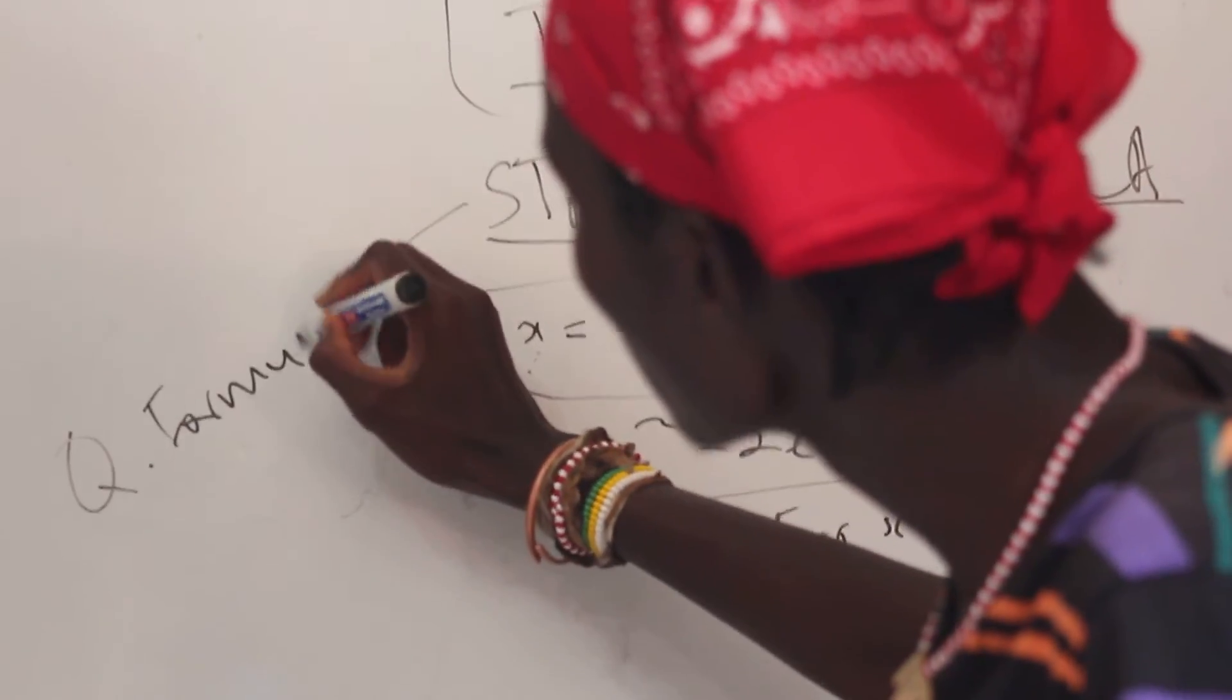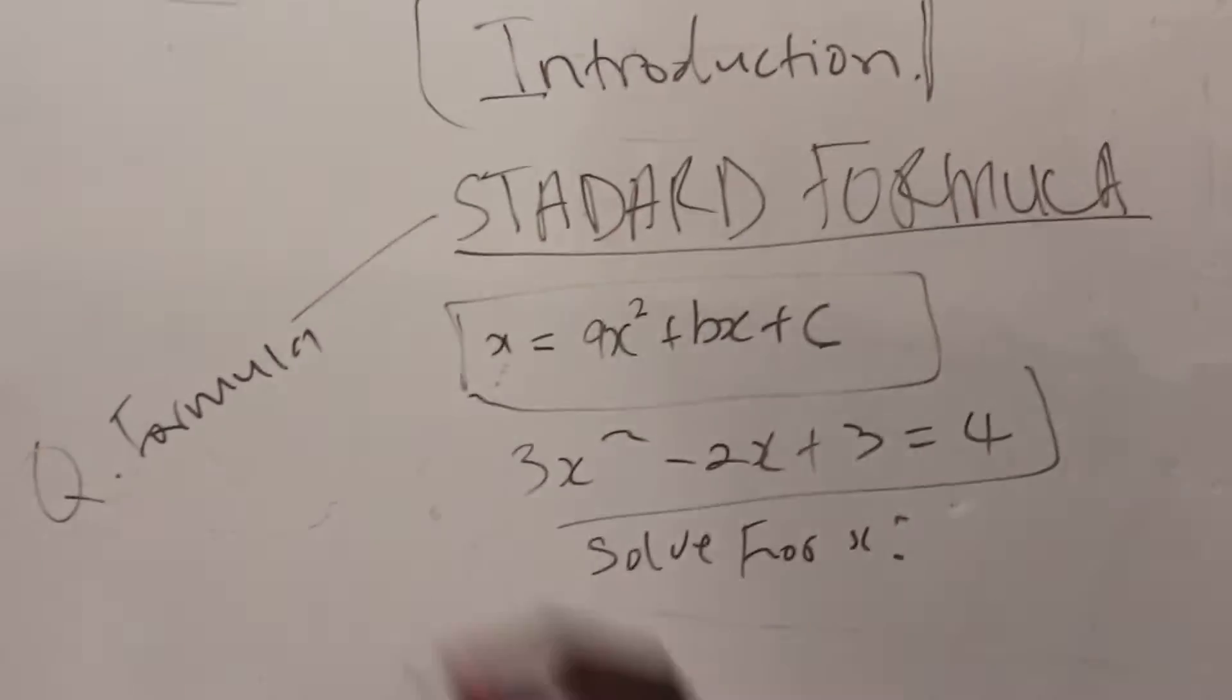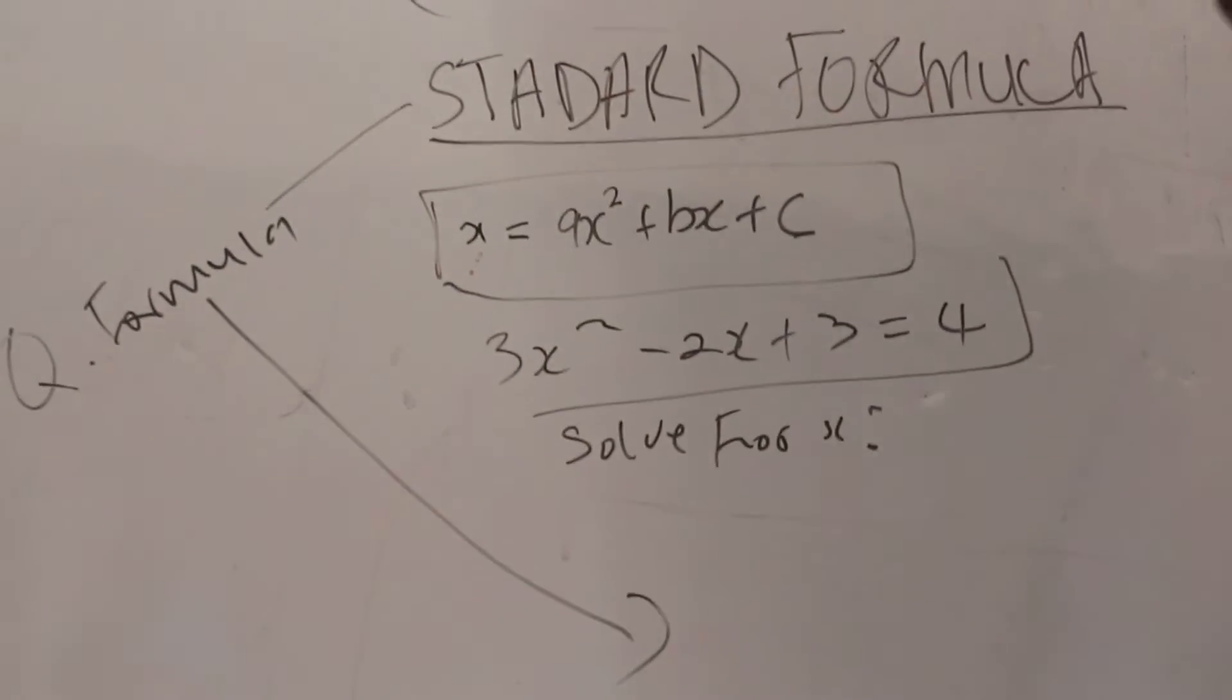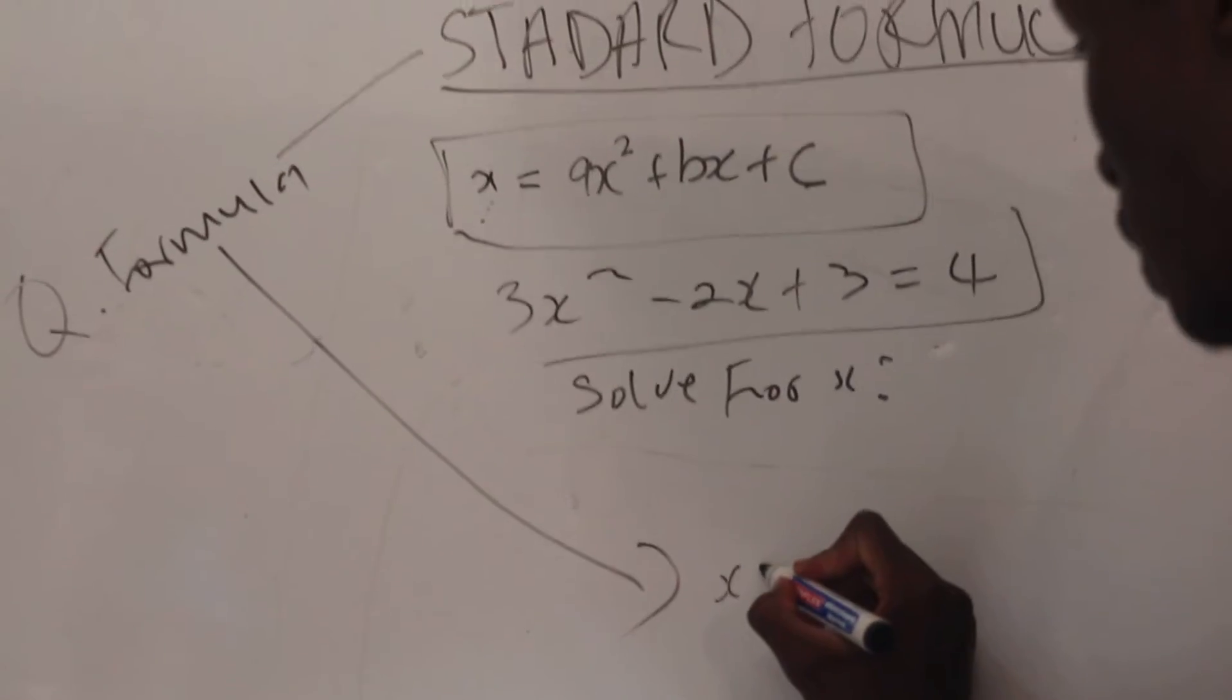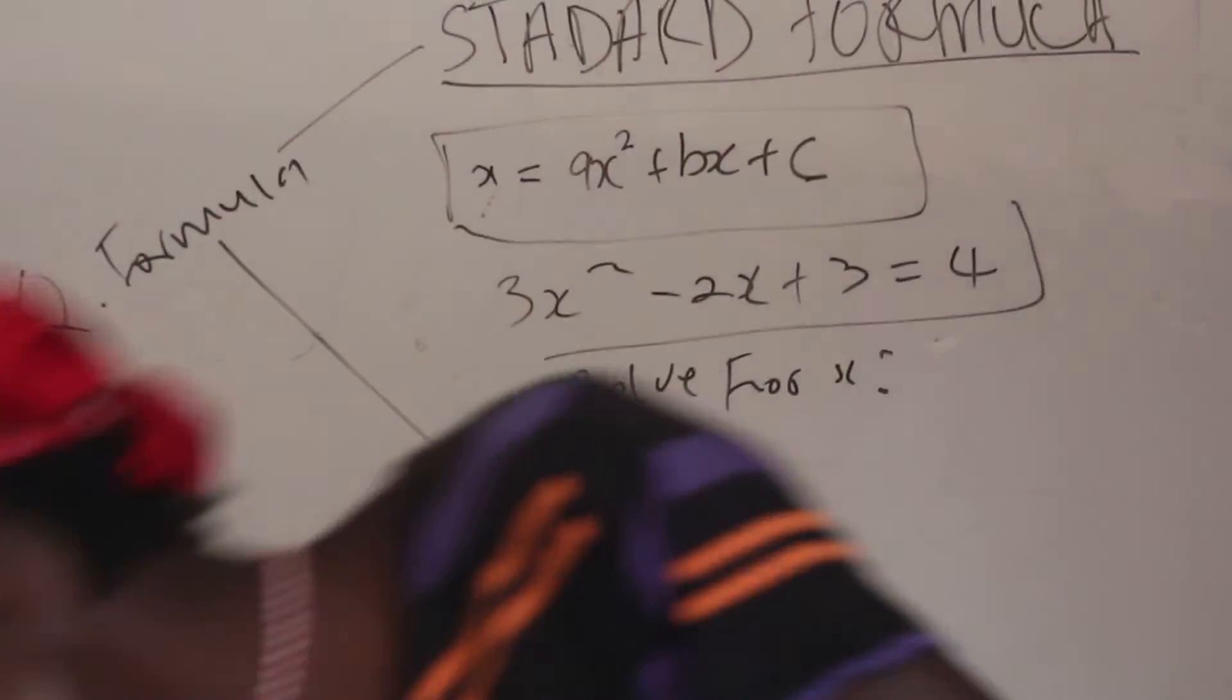I used to call it the Q formula, but it's the Q formula. I forgot it but I'm just going to try and remember. It's there behind your answer sheet or your question paper on the formula sheet.